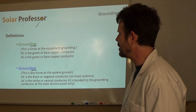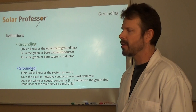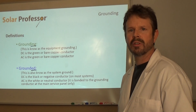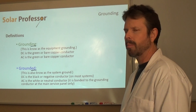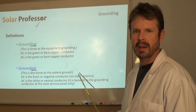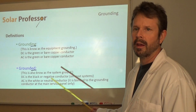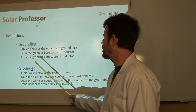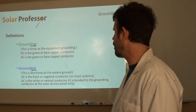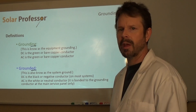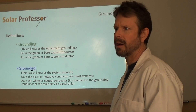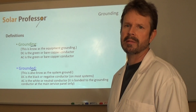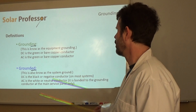On the DC side, the grounding conductor is the green or bare copper conductor. You've seen that in systems and wiring diagrams. On the AC side, it's the same thing — green or bare copper. Sometimes in older or newer equipment you'll see it green with a yellow stripe, which is also acceptable. All of that is the equipment grounding conductor.